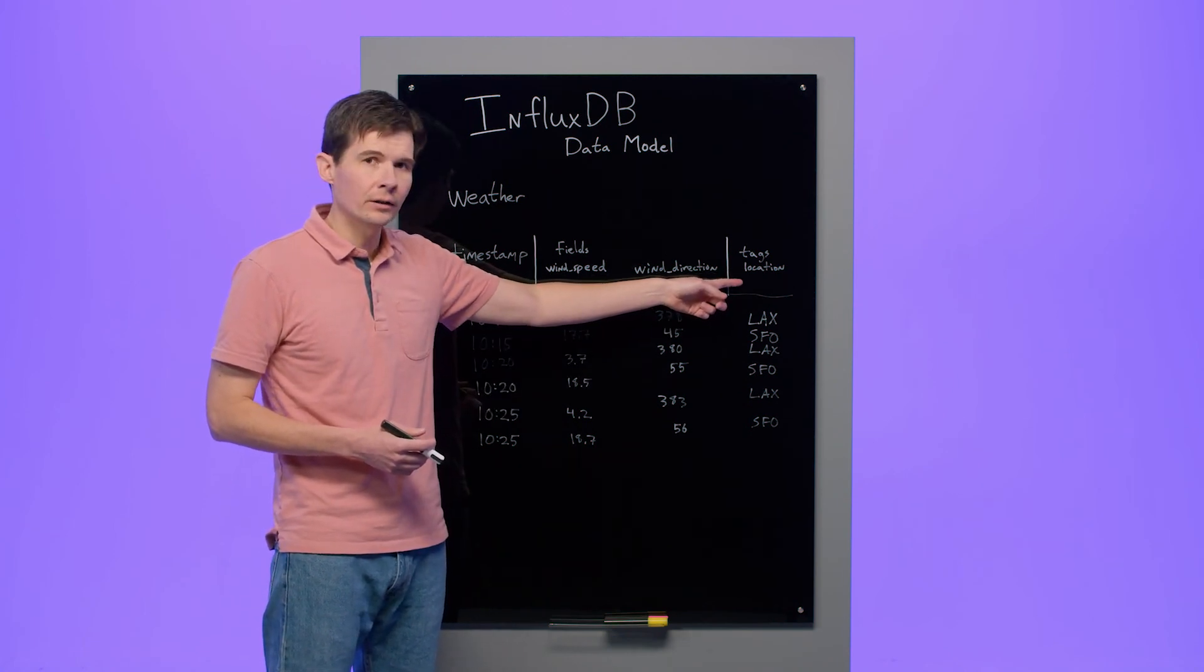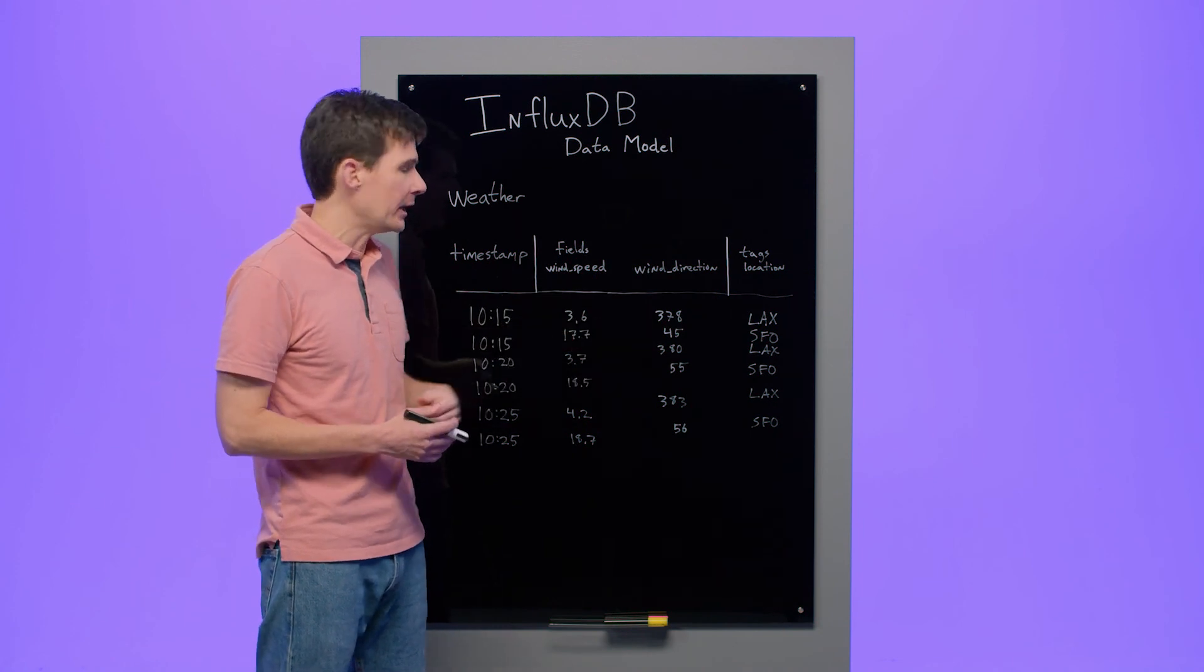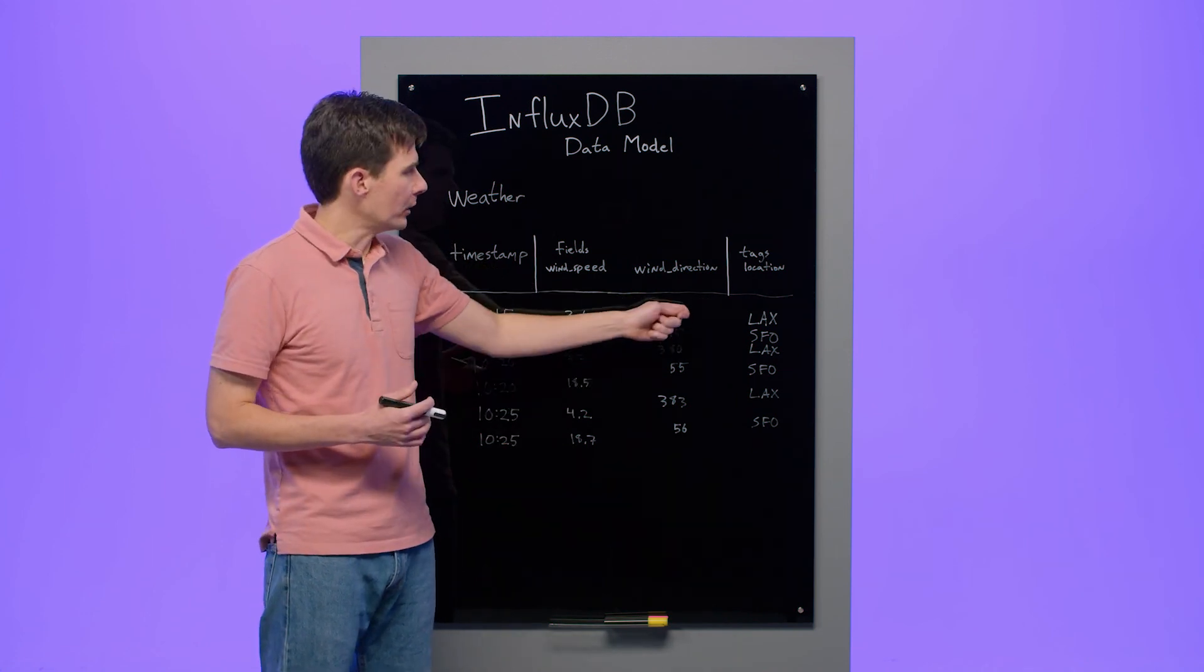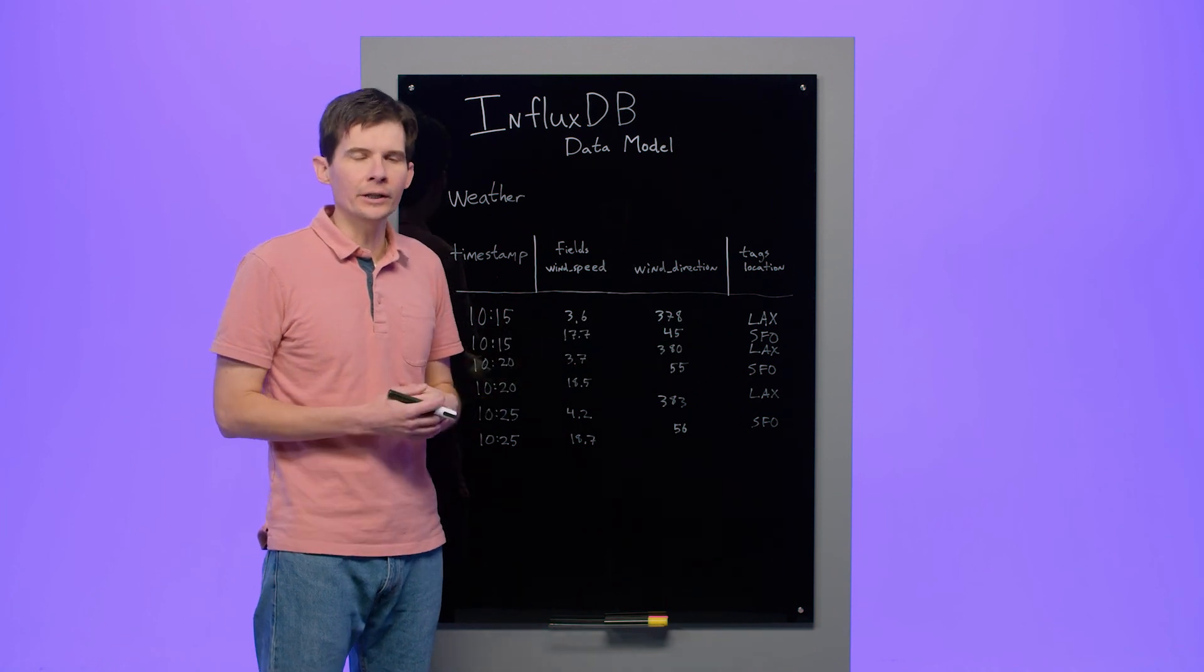Tags are metadata to describe our field data. Here we've used the location tag to indicate which weather station collected which data. When we go back to query this data, we'll leverage the location to filter or group by the location, or which weather station collected what data.